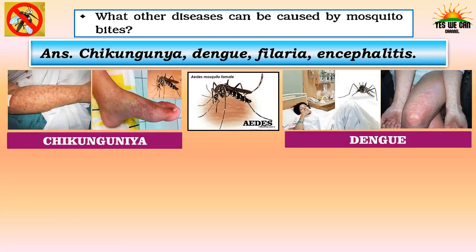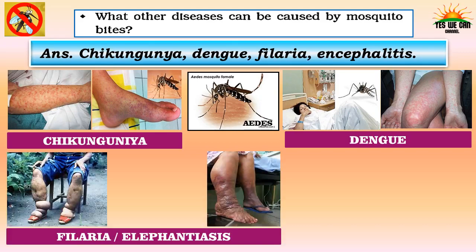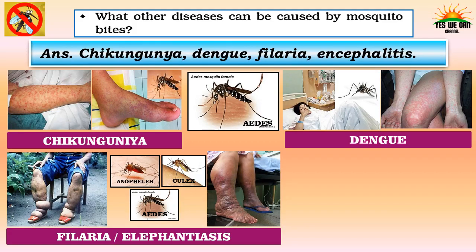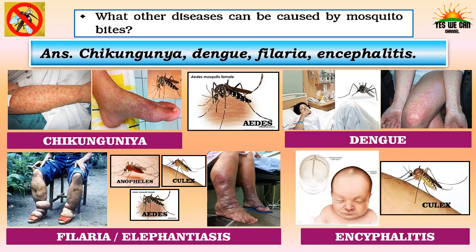Other diseases caused by mosquito bites are Chikungunya, Dengue, Filaria and Encephalitis. Chikungunya and Dengue are transmitted by bites of infected female Aedes mosquitoes, which mainly bite during the day; skin rashes also appear. Filaria may be spread by female Anopheles, Aedes and Culex mosquitoes — arms and legs can swell and become much bigger, and the affected skin can thicken and harden like an elephant's skin, which is why it is also called Elephantiasis. Female Culex mosquitoes spread Encephalitis, which can damage the brain and cause memory and speech problems.